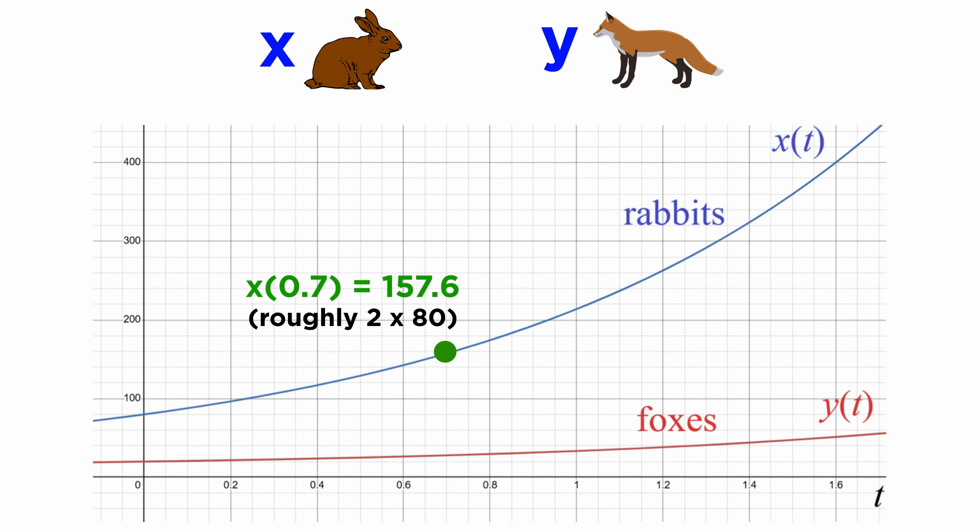We can show, for example, that this model predicts that the rabbit population has doubled after about 0.7 units of time.